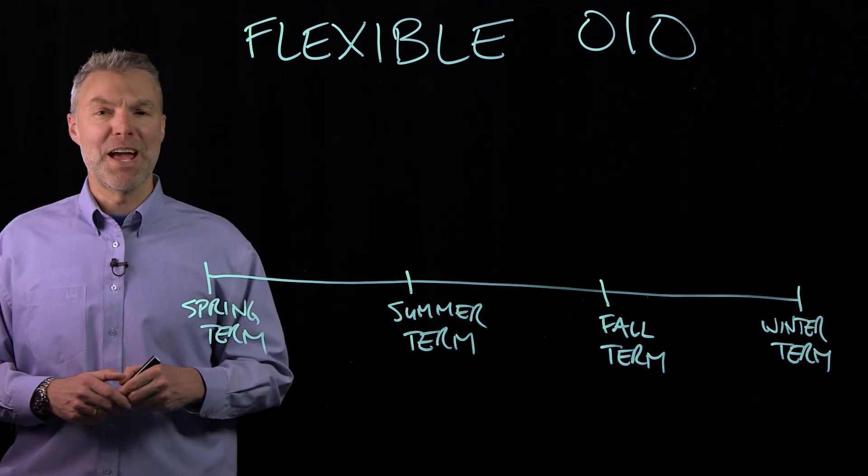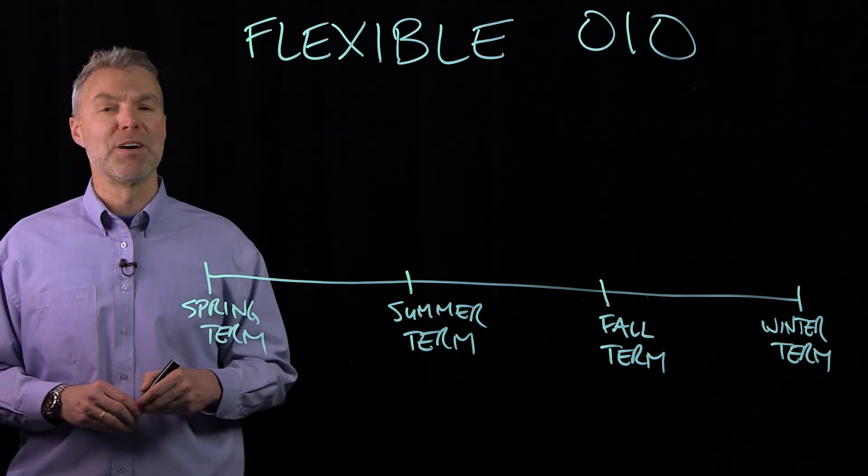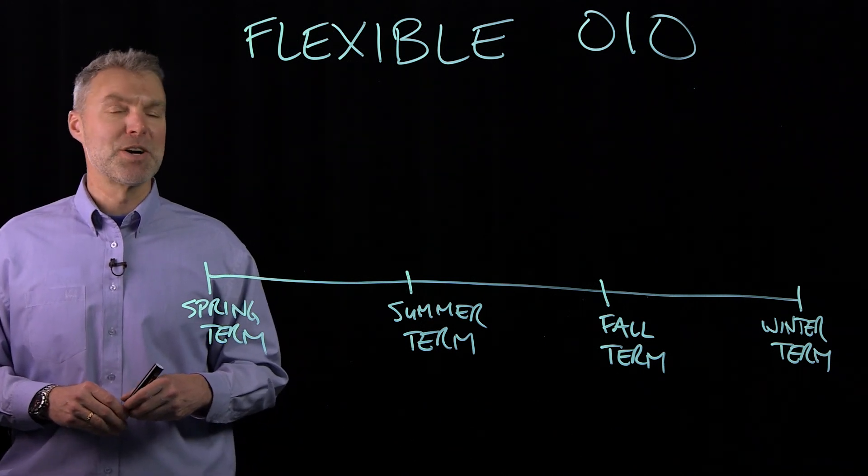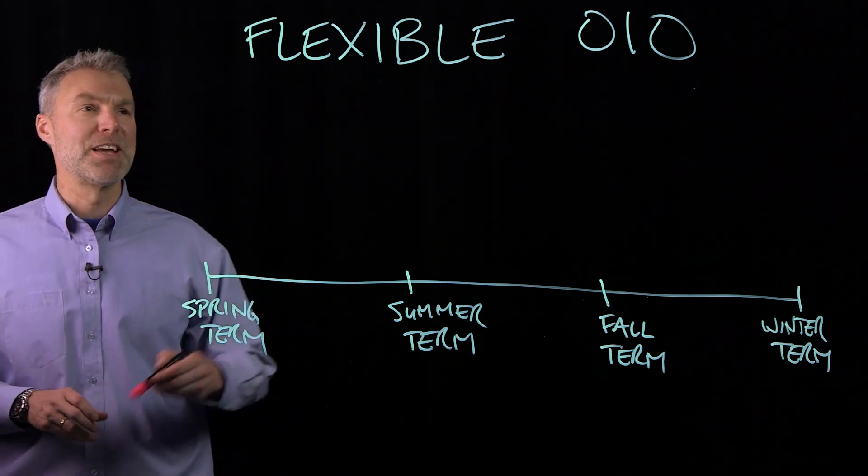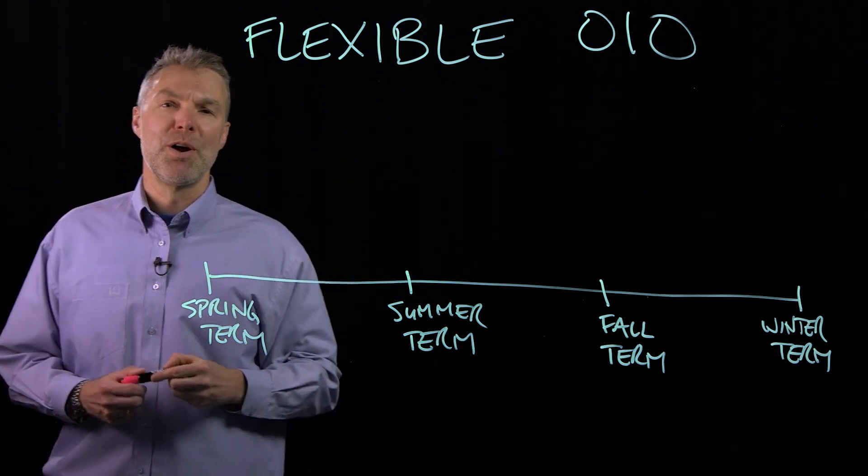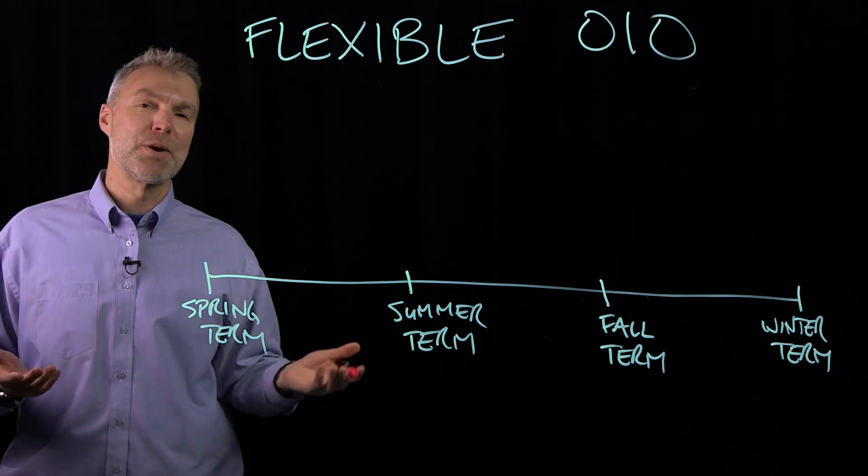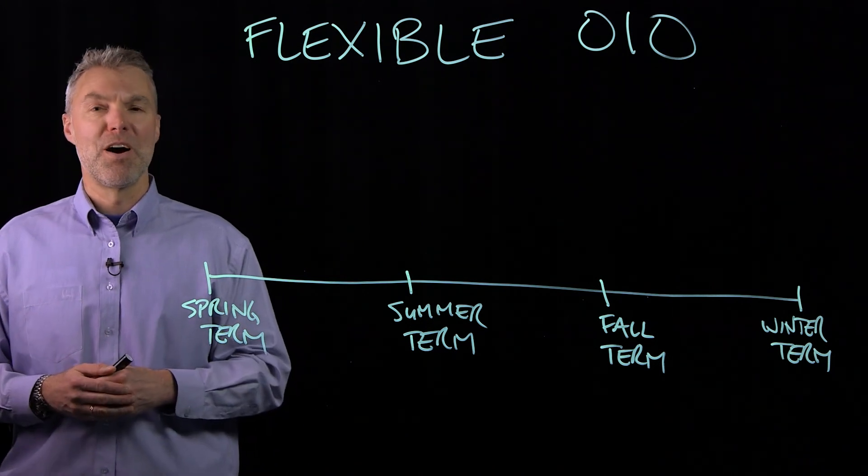The main vehicle that we have at PCC for helping new instructors to develop and teach online courses is this program that we call the Flexible OIO. OIO stands for Online Instructor Orientation, and this is our required orientation for all new online instructors.